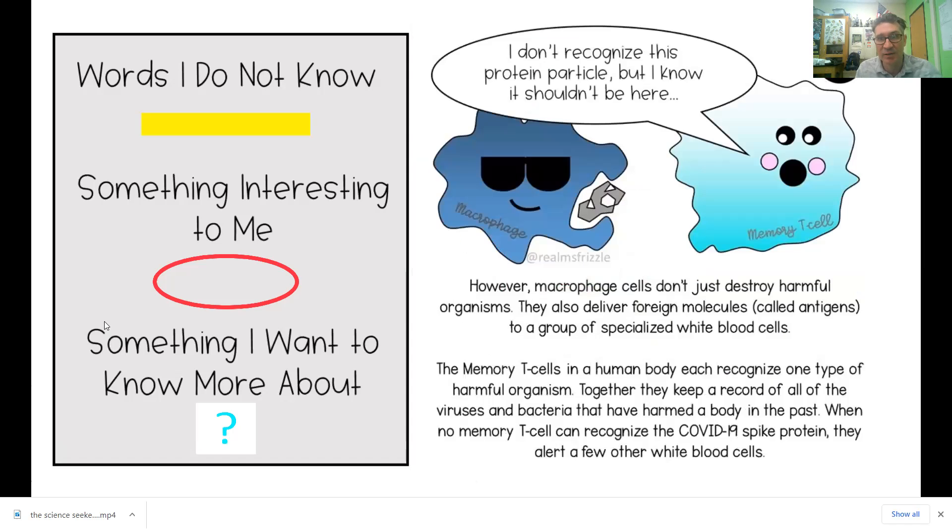However, macrophage cells don't just destroy harmful organisms. They deliver foreign molecules called antigens to a group of specialized white blood cells. The memory T cells is where we get into our antibodies, and the human body recognizes only one type of harmful organism. Together, they keep a record of all of the viruses and bacteria that have harmed your body in the past.